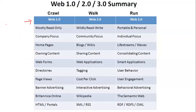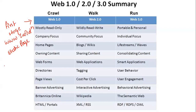Web 1.0 is called the first stage — it is an evolution of the World Wide Web. It is known as static pages, where the content is served from the server's file system. Frames and tables are used to position and align elements on the page. Basically, Web 1.0 is mostly read-only and is company-focused, with home pages owning the content.